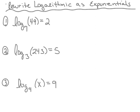In this video we'll be looking at rewriting logs in the form of an exponential. On number one we have log base seven of forty nine is equal to two, and we're going to rewrite this as an exponential. The first thing we need is the base, which is seven. That base needs an exponent — the exponent in this case is two — and it equals the argument, which is forty nine. Therefore this log becomes the exponential: seven squared equals forty nine.